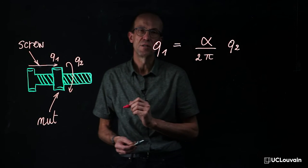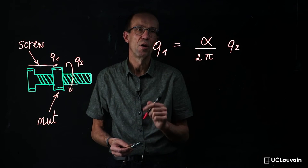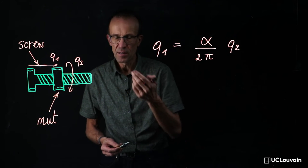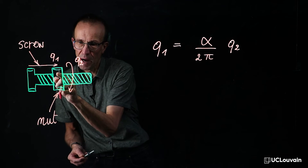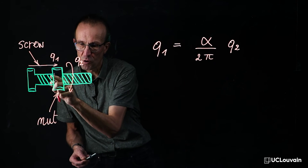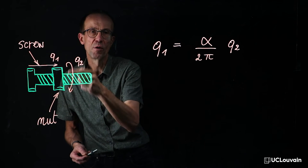In this relationship, α denotes the lead, that is, the distance travelled by the nut on the screw for one revolution.